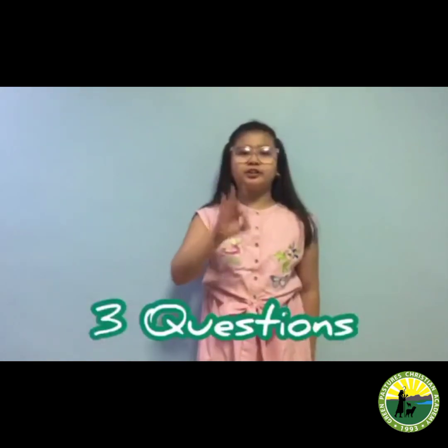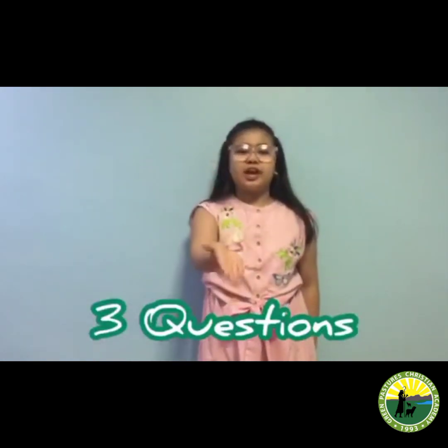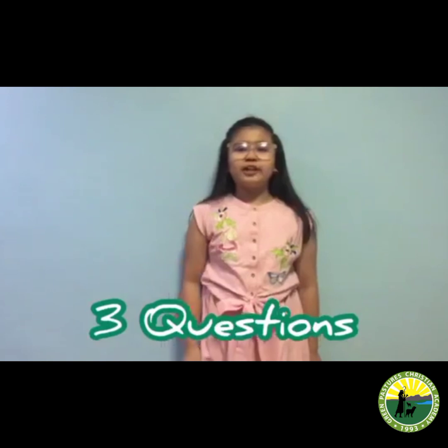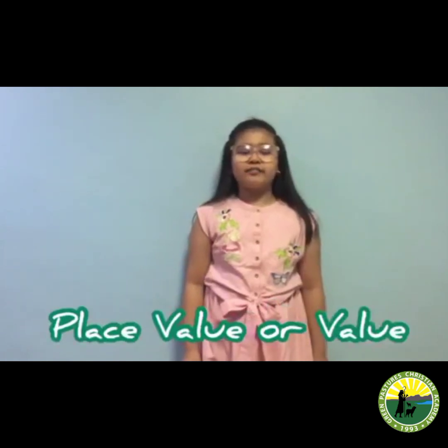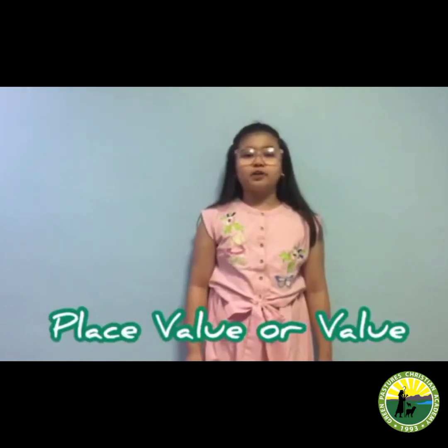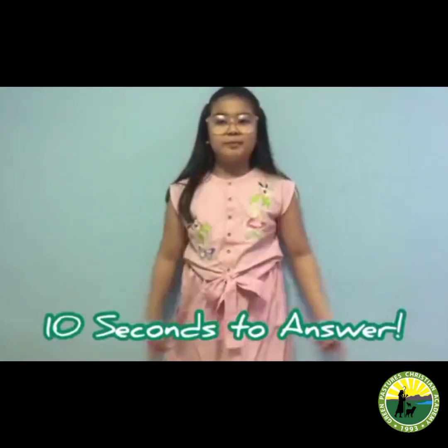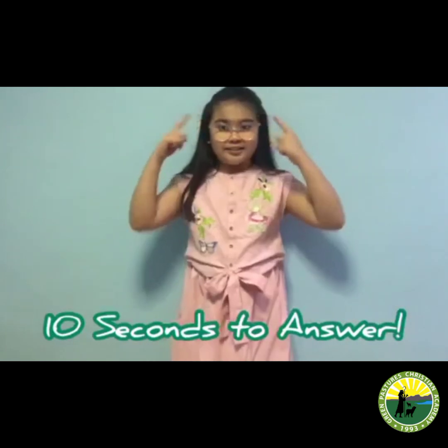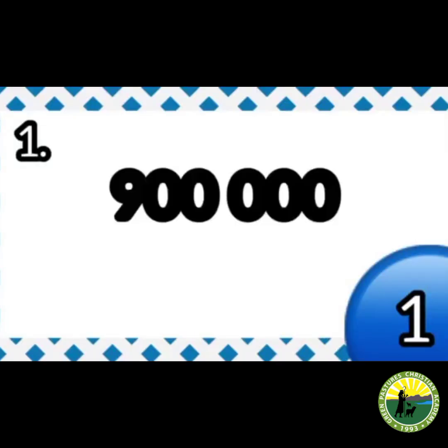Good job! Now that you know the difference, I'll give you 3 questions to be answered — you need to identify if it's a place value or a value. I'll give you 10 seconds to think about your answer. Number 1: 900,000.